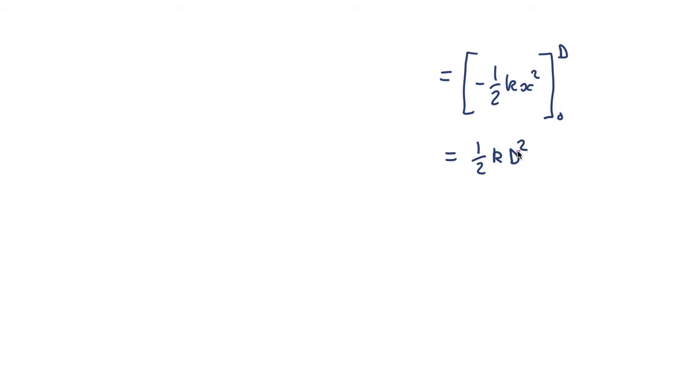Which is equal to 1/2 k d squared. So that's the amount of work it takes you to compress a spring by that amount, so it's the amount of energy that's gone into the spring. So we have the two fundamental equations for springs. We have the force equals minus k times the extension. The energy put in is equal to 1/2 times the spring constant times how much you've compressed it or stretched it squared.